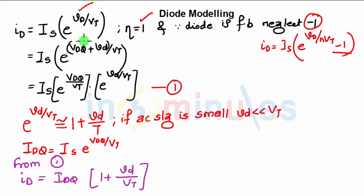Now you have the voltage applied together of DC as well as AC. So instead of Vd, we have DC voltage as well as AC voltage divided by Vt. Now separating the terms, you have e^(VDC/Vt) × e^(Vd/Vt).